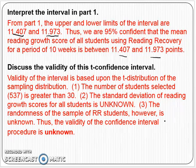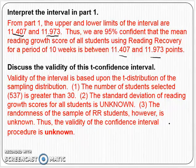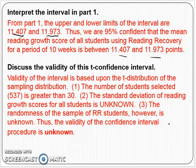As we do with the Z interval, let's assess the validity. The validity is based on the T distribution since we do not know the standard deviation of the population, so our X-bars follow a T. The number of students selected is 537, much greater than 30. The standard deviation of reading growth scores for all students is unknown; we know it for the sample but not for all students.